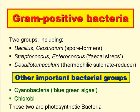The gram-positives are in two groups, but we don't need to know this level of detail. Suffice it to say that among the gram-positives are the genera Bacillus and Clostridium, with the former being aerobic and the latter anaerobic; the Clostridia are also spore formers. The so-called faecal streps — members of the genera Streptococcus and Enterococcus — are gram-positive, as are members of the genus Desulfotomaculum, which are thermophilic sulphate-reducing bacteria.